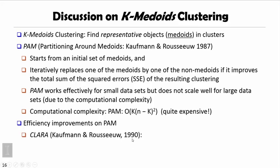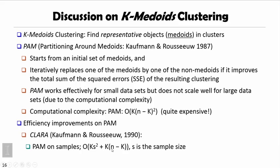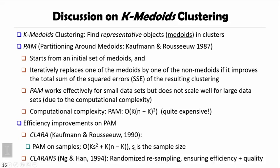To improve efficiency, one proposal by the same authors in 1990, called CLARA, is essentially PAM applied on samples. Instead of using all points, we choose a sample S of a given sample size. The computational complexity then reduces from depending on all points to depending on just the sample size. However, if the initial sample selection is poor, the final clustering quality could also be poor. Then in 1994, another algorithm called CLARANS was proposed, where every iteration we randomize the resampling — we do not keep exactly the same sample — which ensures both efficiency and good clustering quality.